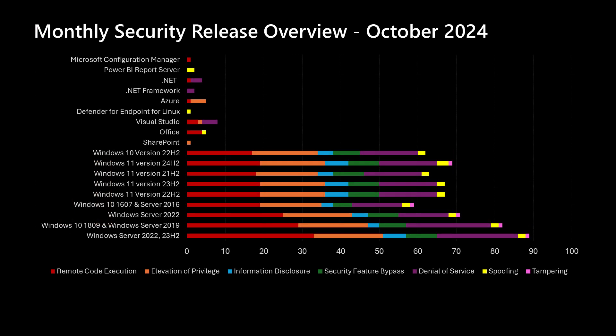That's the comparison of this release to the previous 12 months. Here's our overview chart, where we present the Windows products towards the bottom part of the chart and then move up into products not necessarily serviced every single month. We've been averaging mid to high 40s depending on the specific operating system, and we're well above that average this month due to the higher total number of vulnerabilities. Moving up the chart, we have SharePoint and Office with a small number of vulnerabilities, Visual Studio, .NET Framework, and .NET in our Developer Tools section. Defender for Endpoint for Linux, Power BI Report Server, and Microsoft Configuration Manager also have vulnerabilities being addressed this month.